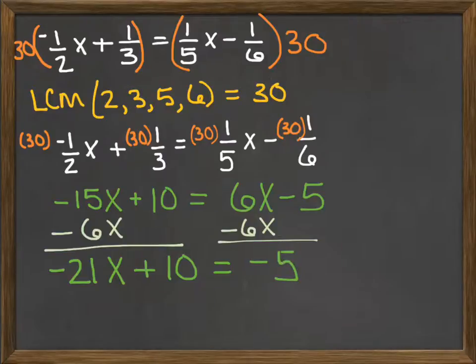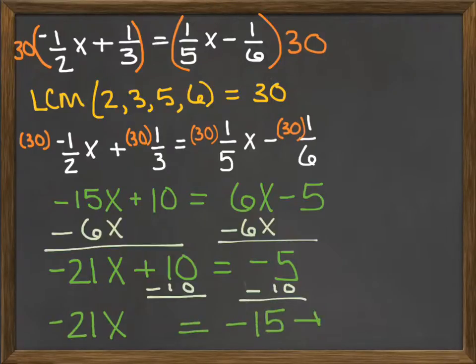Then I would subtract ten from both sides of the equation. Now I'd have negative twenty-one x is equal to negative fifteen.